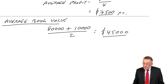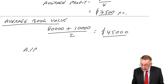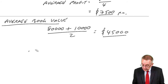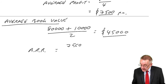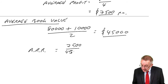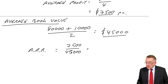And therefore the accounting rate of return: average profit 7,500, average book value 45,000, expressed as a percentage — that gives approximately 16.7%.